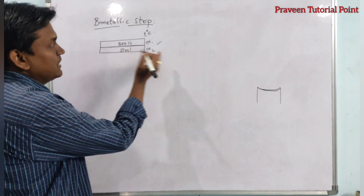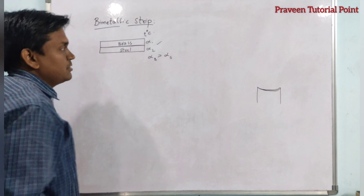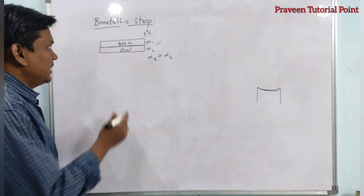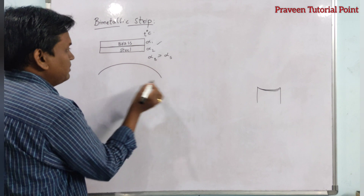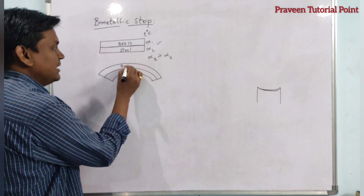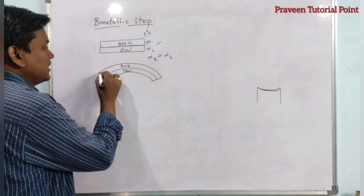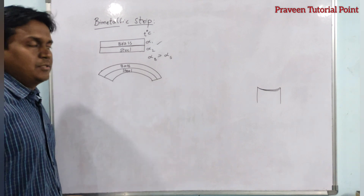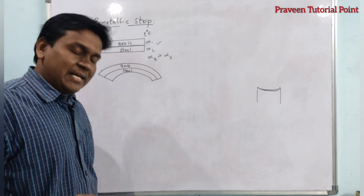They are of the same length at some temperature t degrees Celsius. The coefficient of linear expansion of brass is greater than that of steel, meaning brass will expand more compared to steel. Due to that, if you apply heat to this bimetallic strip, it will bend. On the surface of brass it will be a convex surface and at the steel side it is a concave surface, since the expansion of brass is greater than steel.